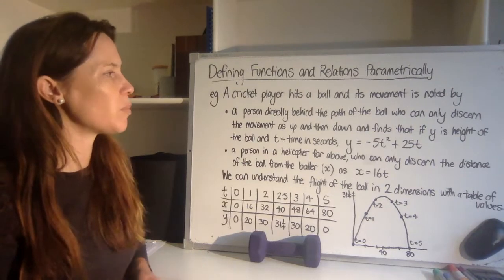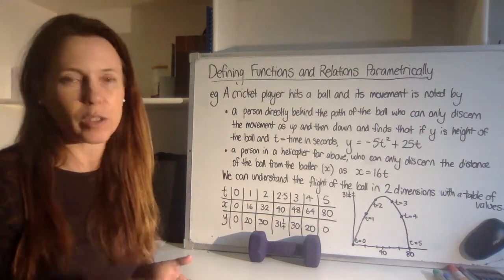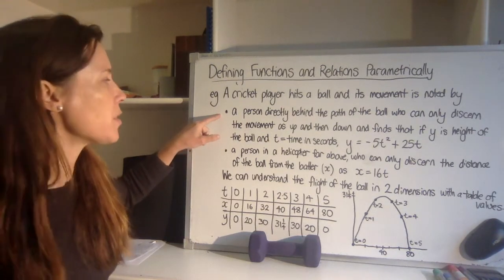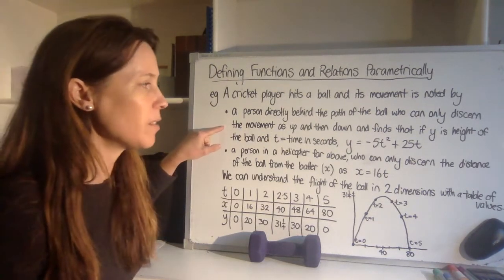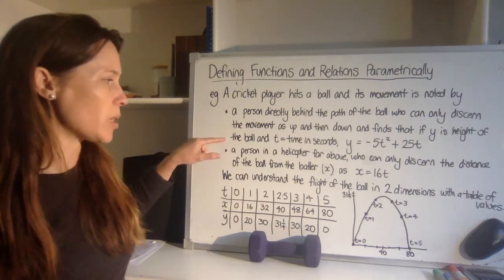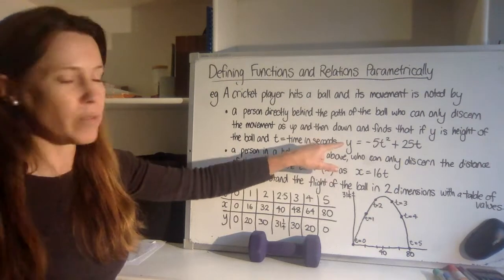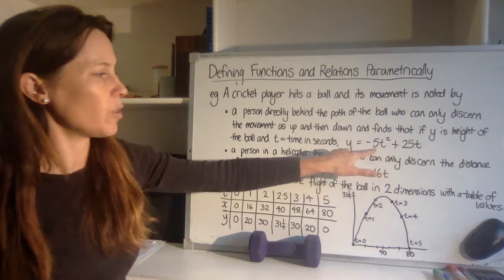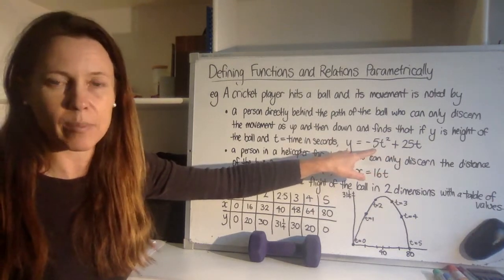A cricket player hits a ball, and its movement is noted by two people, a person directly behind the path of the ball, who can only discern the movement as up and then down, and finds that if y is the height of the ball, and t equals time in seconds, then the ball moves according to this rule here. And we can see from our knowledge of quadratic functions that this is an upside-down parabola.